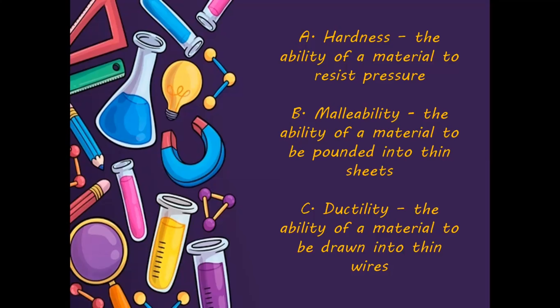Next is malleability — the ability of a material to be pounded into thin sheets. When we say pounded, pinupukpuk or minartelyo natin siya, ito ay nagiging thin sheets. For example, yero, or the traditional pot making here in the Philippines — yung mga metals na ginagamit sa paggawa ng kaldero. Ibinababad yan sa apoy tapos pinupukpuk siya paulit-ulit para magkahuli, nagiging manipis siya. That is malleability.